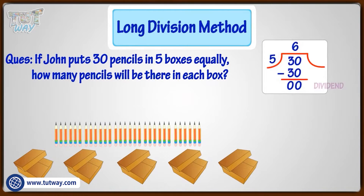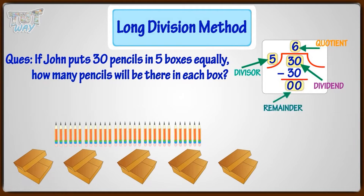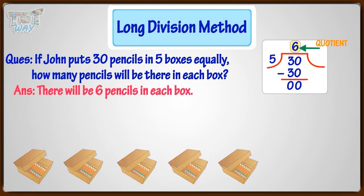Here, dividend is 30, divisor is 5, quotient is 6, and remainder is 0 — that is, no pencil is left. What we need here is the quotient, which is 6. So, there will be 6 pencils in each box.